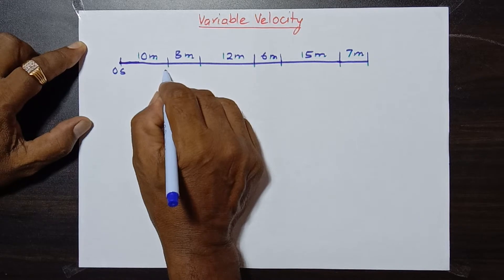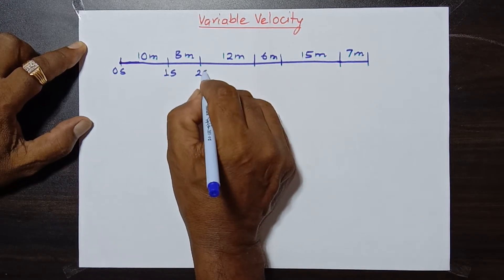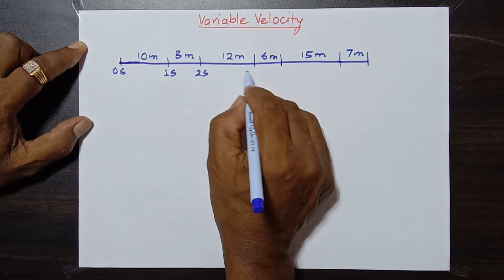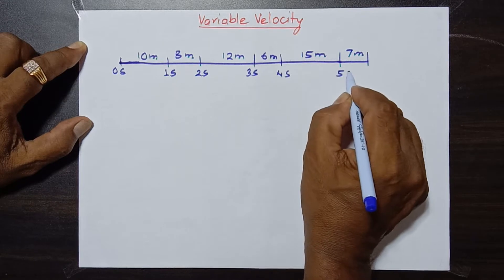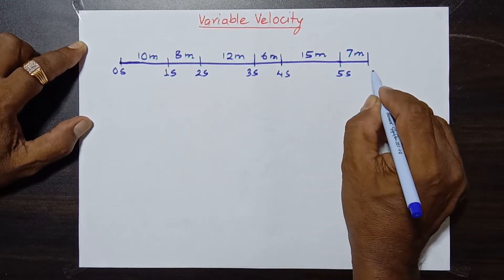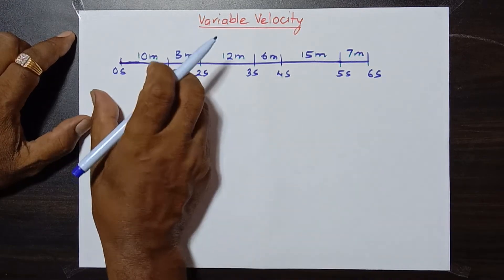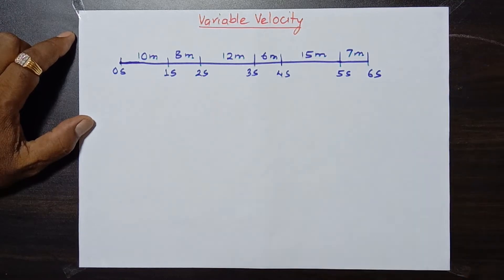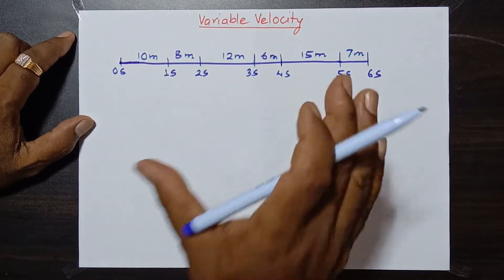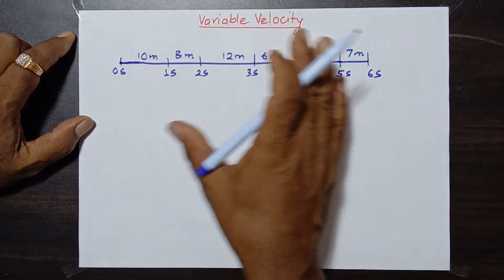What is seen about this motion? Look at the end of two seconds, three seconds, four seconds, five seconds — we are taking up to 6 seconds only. Look at this: every second, it covers a different distance — sometimes more and sometimes less. And this type of motion of the body is called variable velocity.